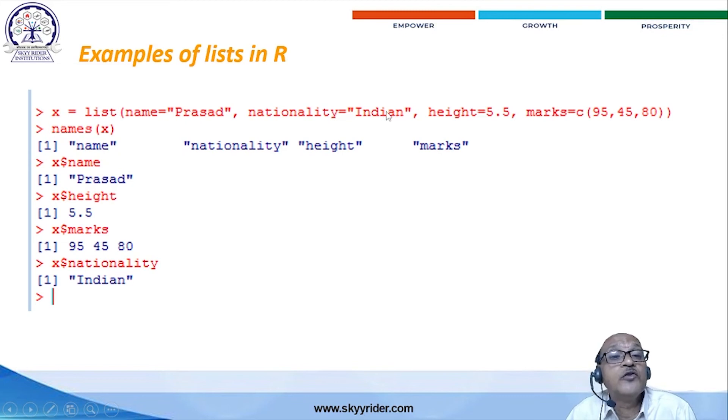You want to go for a particular value must be required. That means X - X means it is a variable - dollar symbol by name. Dollar symbol, name. You want name, for example. At that time, you will be indicating the cell. You want to nationality, for example. X dollar sign, height, dollar sign, nationality.